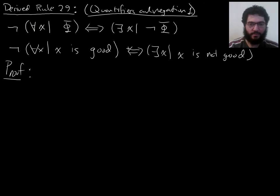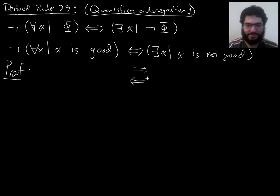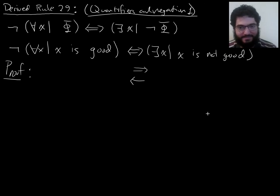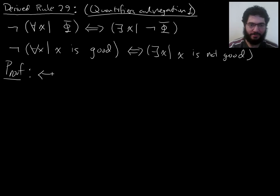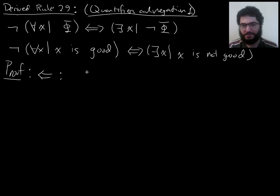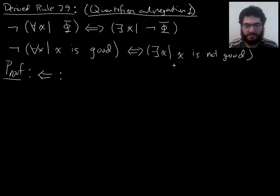I usually like to start with what I think is the simpler direction of the two directions. There's going to be two parts to the proof — this arrow part and this arrow part — and I think the simpler one is going to be this one. It doesn't really matter what order you go with. So for the leftward direction, I get to assume that there is an x such that x is not good. In other words, I'm assuming something is not good.